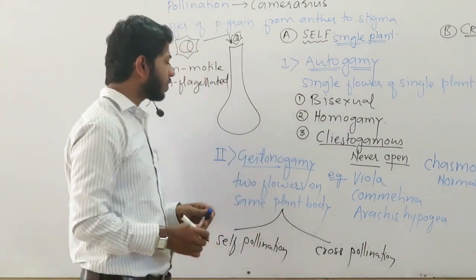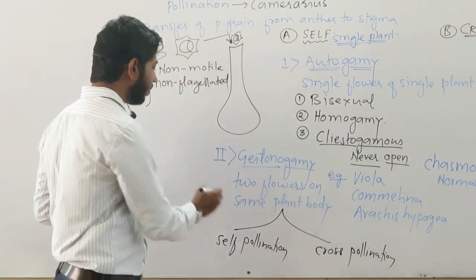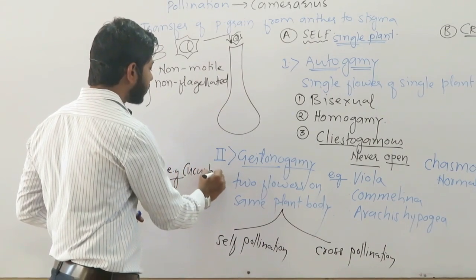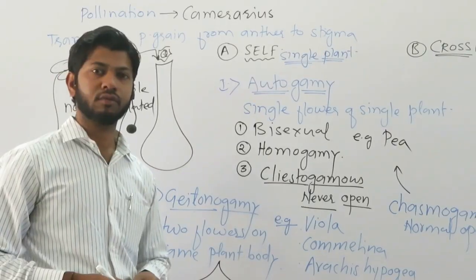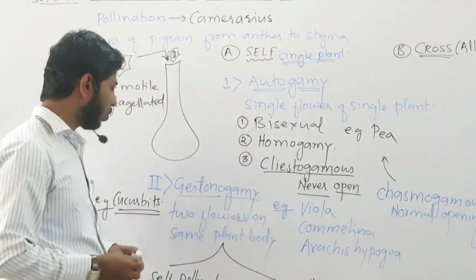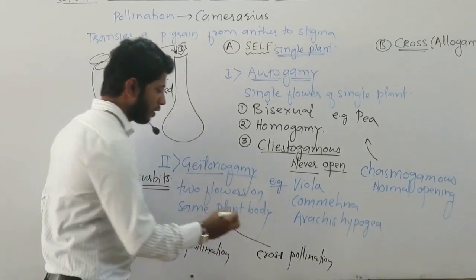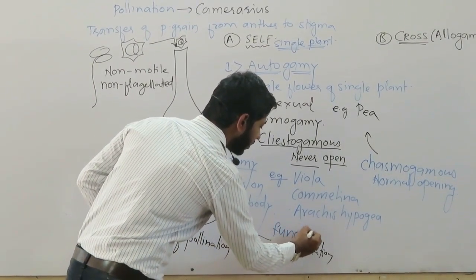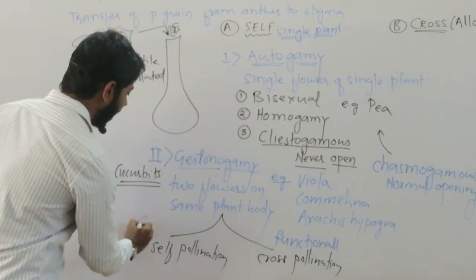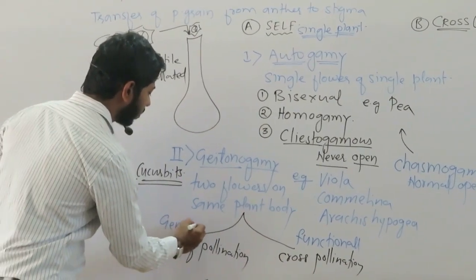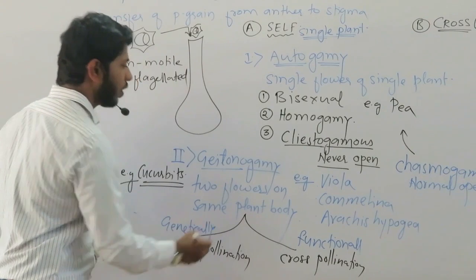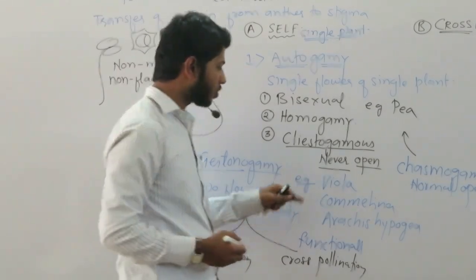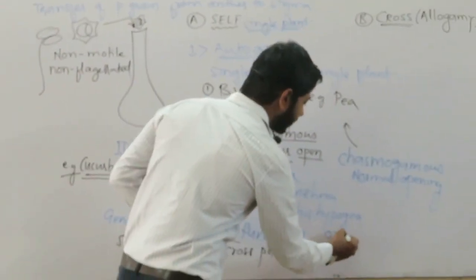Some examples of geitonogamy: cucurbits. In cucurbits, geitonogamy occurs. So geitonogamy is functionally cross-pollination and genetically self-pollination.